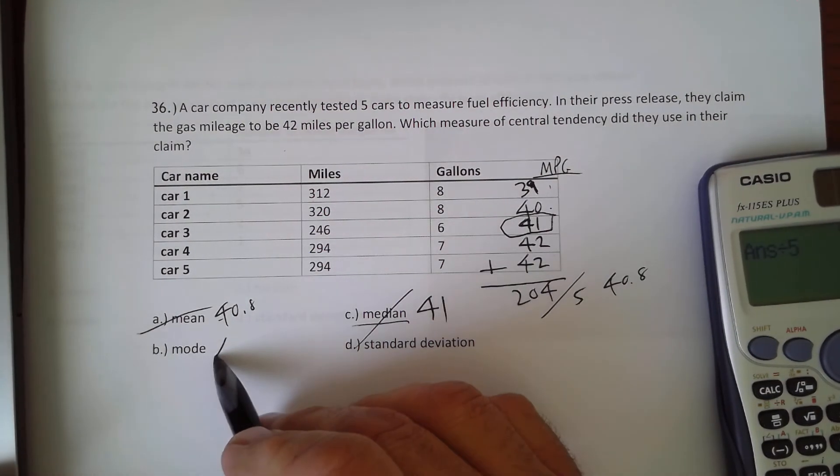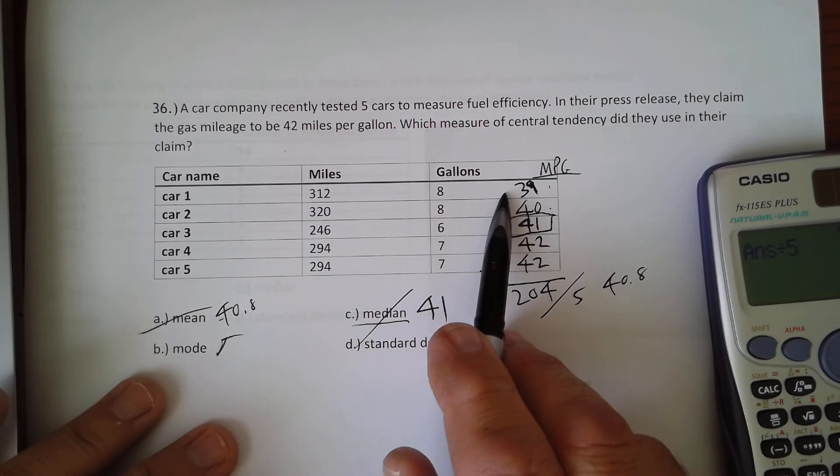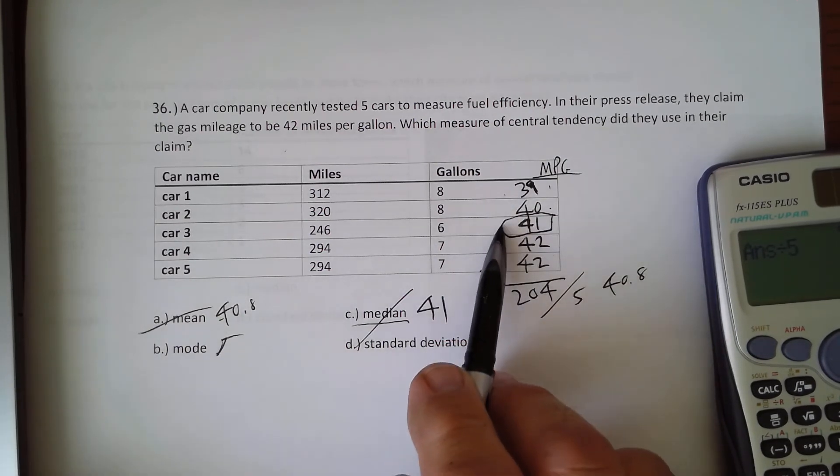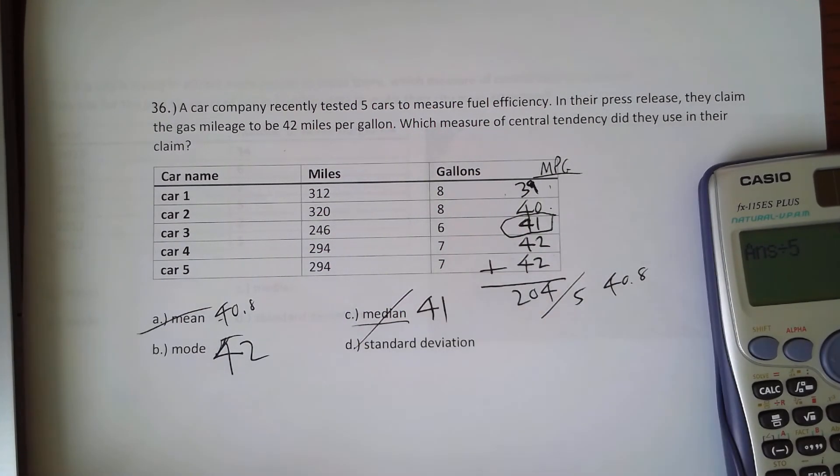And the next is the mode. The mode is which one occurs most often. So we only have one 39, we only have one 40, we only have one 41, but we have two 42s.